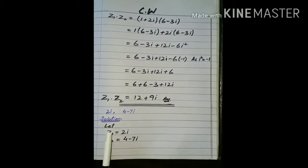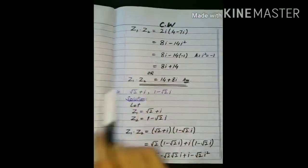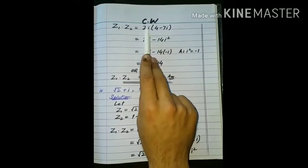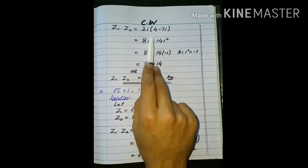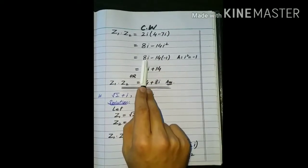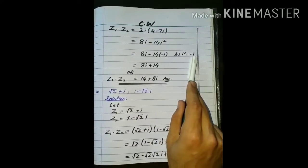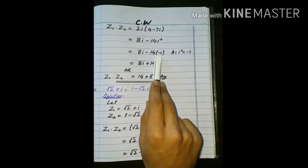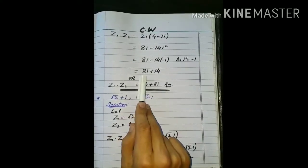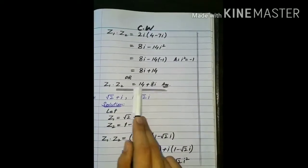Next part ہمارے پاس ہے: 2 iota اور 4 minus 7 iota۔ ان کو Z1 اور Z2 کے name دیئے اور multiply کیا۔ 2 iota کو 4 minus 7 iota کے ساتھ multiply کرنا ہے: four times two is 8 iota، پھر plus minus minus — two times seven is 14 — اور iota iota: iota square آجائے گا۔ تو 8 iota اپنی جگہ پر، minus 14 اپنی جگہ پر، اور iota square کی value minus 1 ہے۔ تو minus minus plus اور fourteen one is 14 آجائے گا اور 8 iota اپنی جگہ پر۔ real part پہلے پھر imaginary part: 14 plus 8 iota۔